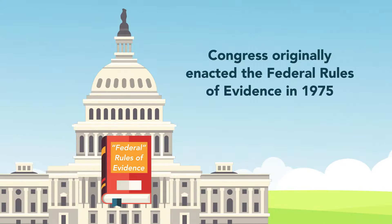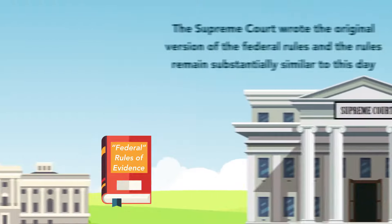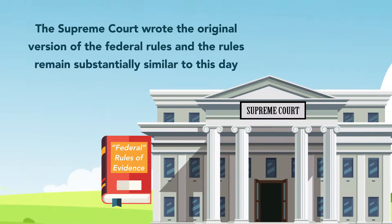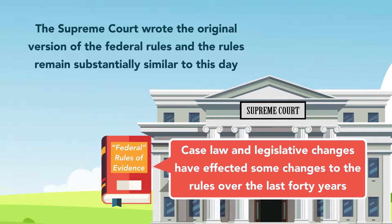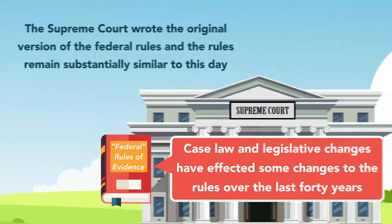Congress initially enacted the federal rules of evidence in 1975. The Supreme Court wrote the original version of the federal rules, and the rules remain substantially similar to this day. However, case law and legislative changes have affected some changes to the rules over the last 40 years.